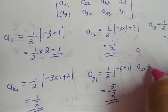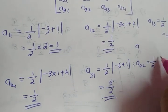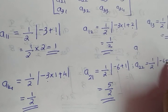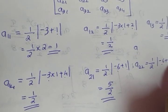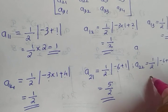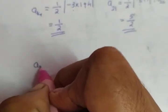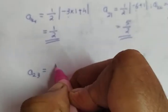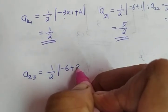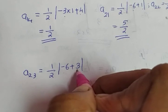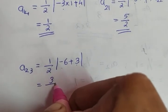A22 is 1 by 2 into modulus of minus 6 plus 2. Minus 6 plus 2 is minus 4; modulus of minus 4 is 4. 4 by 2 gives you the value 2. A23 is 1 by 2 into minus 6 plus 3. Minus 6 plus 3 is minus 3; modulus gives you 3, and the answer is 3 by 2.